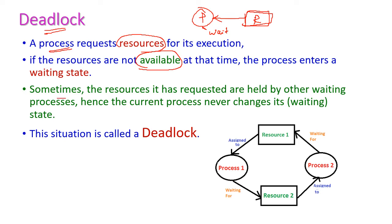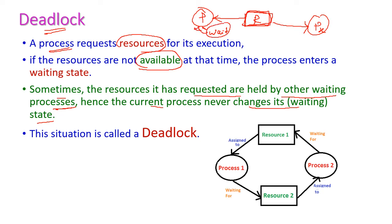Sometimes the resource it has requested is held by another waiting process. This particular resource is held by some other waiting process. Hence the current process never changes its state — it must always wait for that particular resource. Hence this situation is called a deadlock.